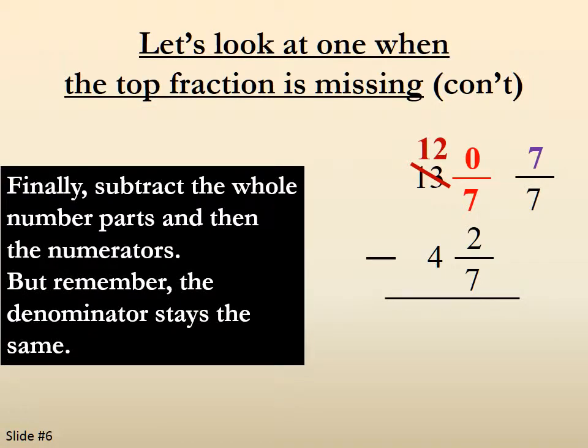And now we subtract the whole number parts and the numerators. So 12 minus 4 gives us 8. And 7 minus 2 gives us 5. And of course the denominator stays the same.